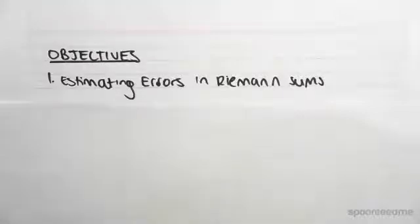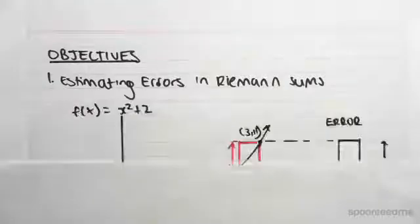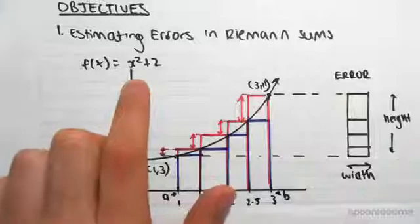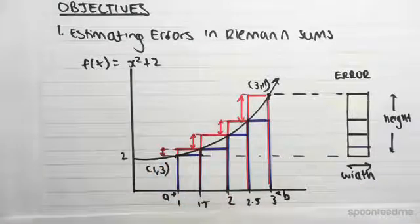Hey guys, the objective of this video is to look at estimating errors in Riemann sums. So I'm taking us back to this problem, f of x equals x squared plus 2. This was the problem we did in the first video.